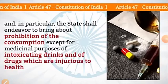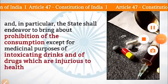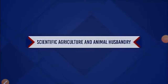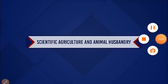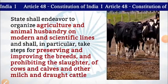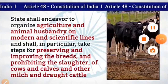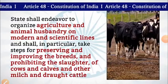Article 47 deals with the prohibition of the consumption, except for medicinal purposes, of intoxicating drinks and of drugs which are injurious to health. Scientific Agriculture and Animal Husbandry: Article 48 provides that the state shall endeavour to organise agriculture and animal husbandry on modern and scientific lines and shall in particular take steps for preserving and improving the breeds and prohibiting the slaughter of cows, calves and other milch and draught cattle.